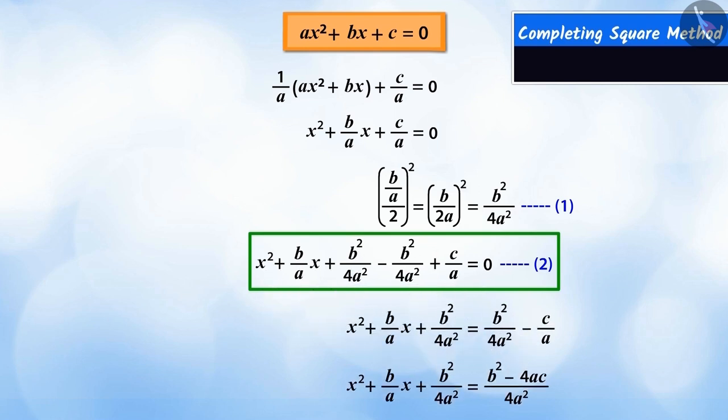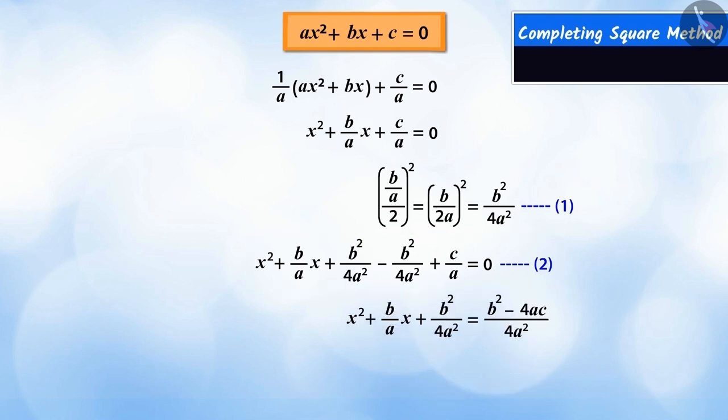On solving equation 2, we get b to the power of 2 minus 4ac upon 4a to the power of 2 on the right side. And by expressing the left side as the square of a binomial, we get this form of the equation.